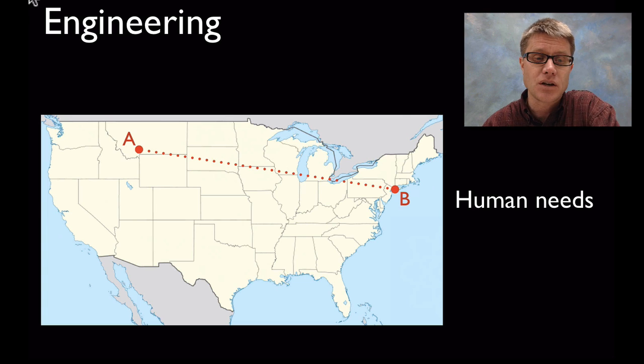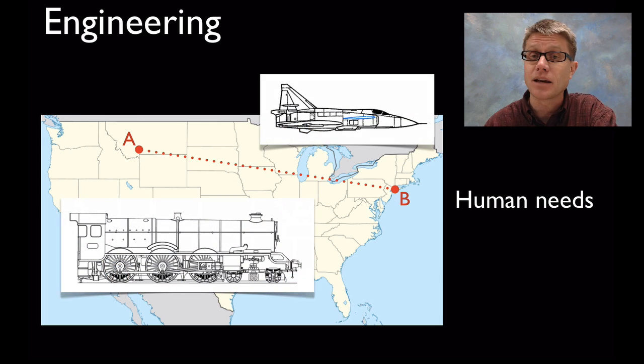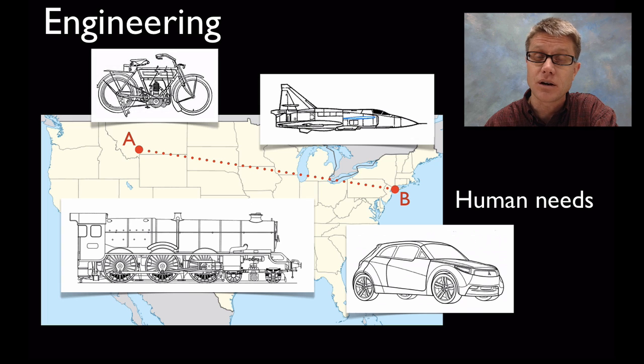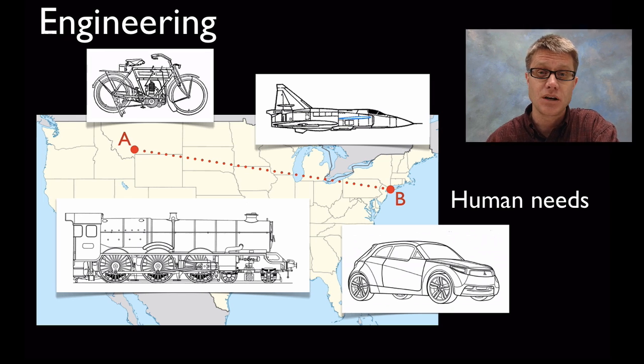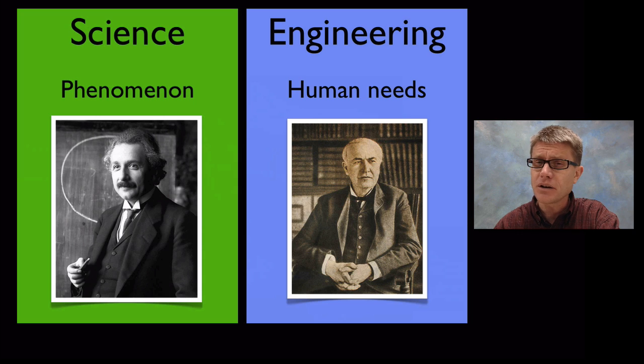And so an engineer is going to solve the problem of how I get in Montana at point A to point B in New York City. And there are a number of different ways they could solve that problem. They could put me on a jet. They could put me on a train or in a car or on a motorcycle. Or they could even design a nice pair of shoes so I could walk my way across the country. And so they're really solving problems in engineering. And so they're very similar but they're somewhat different in that in science we're studying phenomena.